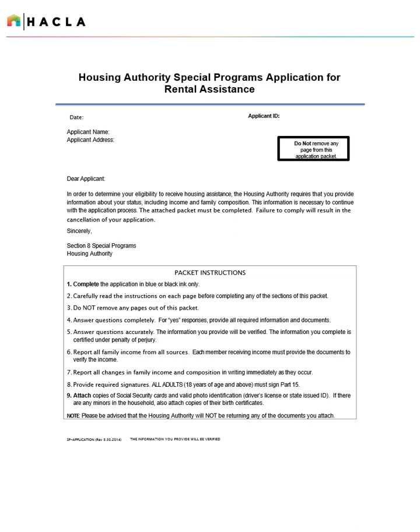Please report all family income from all sources. Each member receiving income must provide the documents to verify that income. Please report all changes in family income and composition in writing immediately as they occur. Please be sure to look out for required signatures throughout the application. All adults 18 years of age and above must sign Part 15.